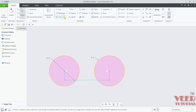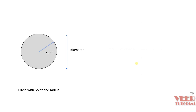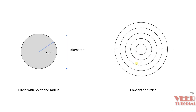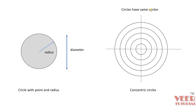The second type of circle we have is the concentric circle. Concentric circles are circles with the same center. If you look at this type of circle, you can see multiple circles, but for all of them the center is common. This type of circle is called a concentric circle.